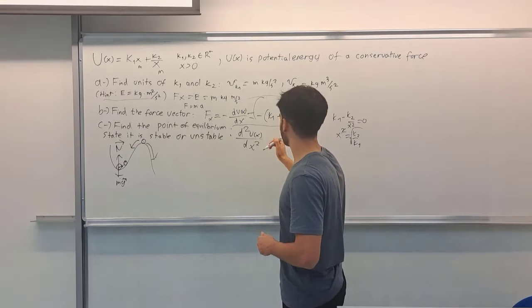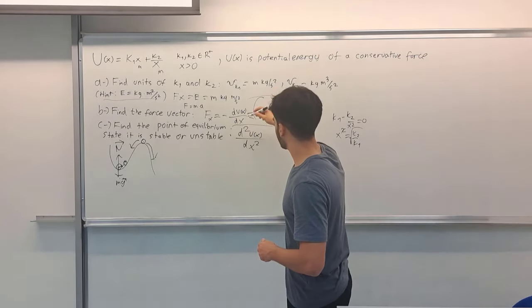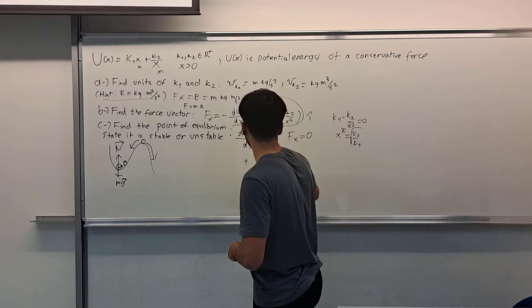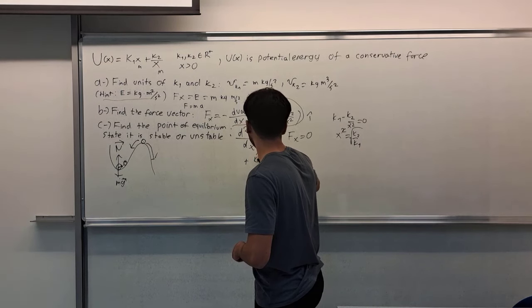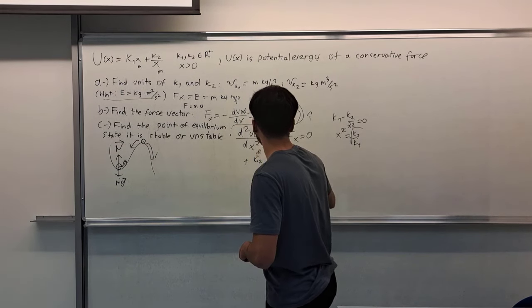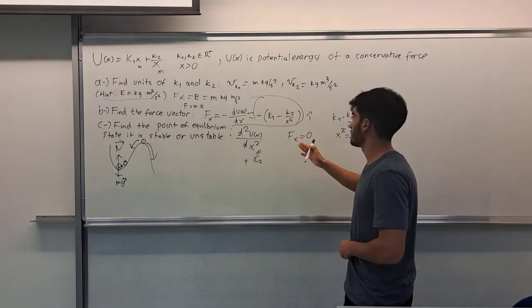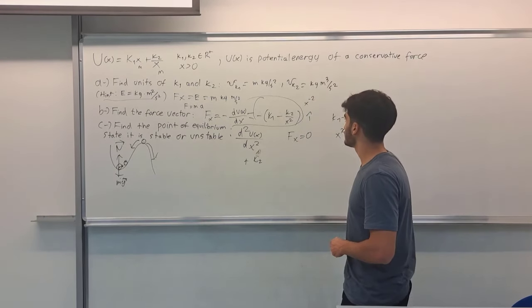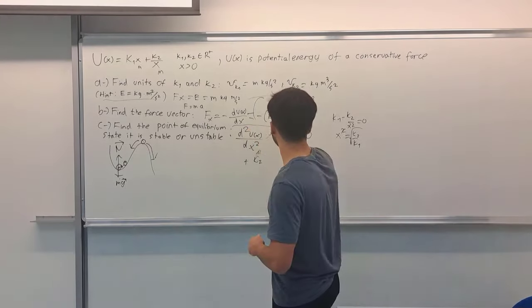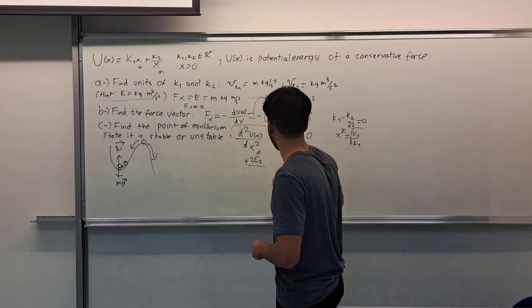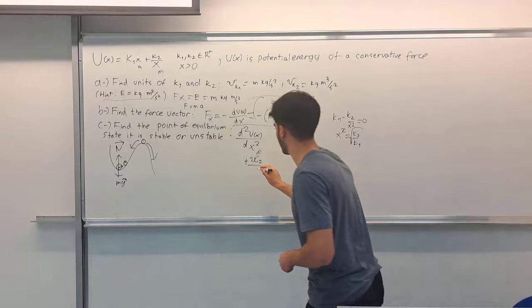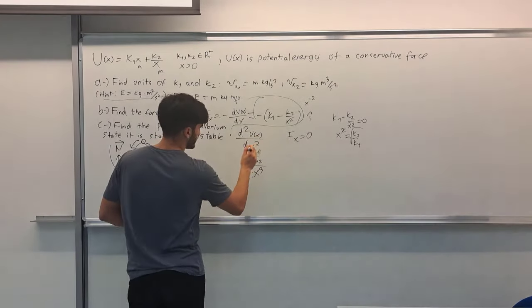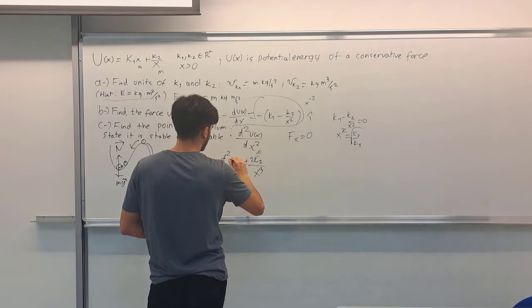Now I am taking the second derivative of this function, but not the minus sign. Therefore, I can get k2, and the derivative of x to the power minus 2 is minus 2. And then 2k2 over x cubed I get. This is the second derivative of the potential energy function.